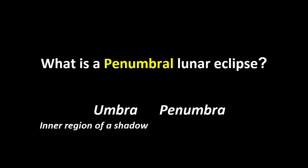Umbra means the inner region of a shadow. Let's say if I stand in front of you and the amount of area that I'm covering for you so that no light falls on you, that region is called the umbra.